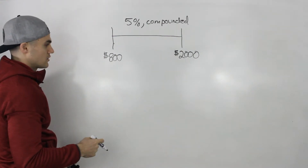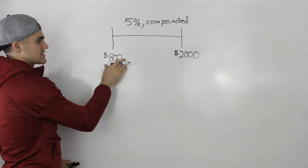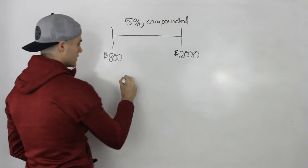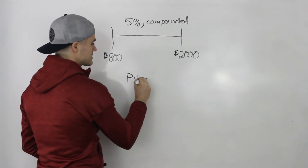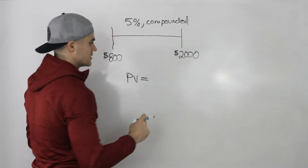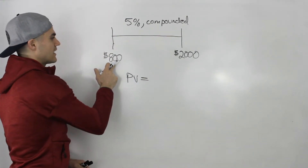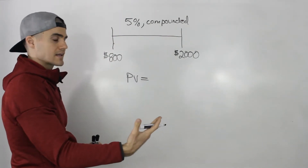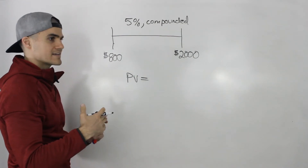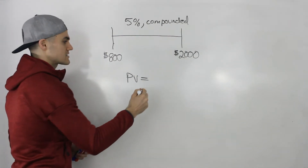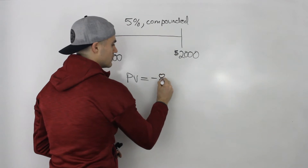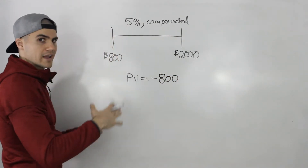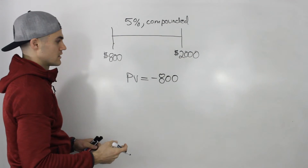You can just do this in your financial calculator. This is a simple single cash flow calculation. Our present value is going to be the amount we invest — this $800. But because we're investing this $800, that is a cash outflow for us, so it's going to be a negative cash flow. Be careful with your negatives and positives in this question.